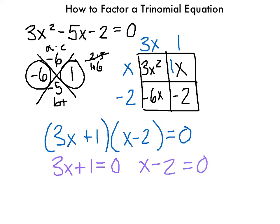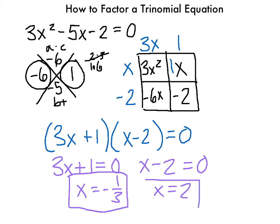For 3x plus 1 equals 0, subtract 1 from both sides and then divide by 3, giving x equals negative one-third. For x minus 2 equals 0, add 2 to both sides, giving x equals 2. So our two answers are x equals negative one-third and x equals 2.